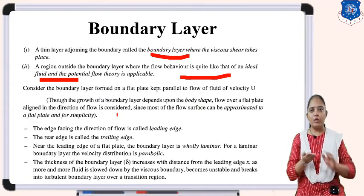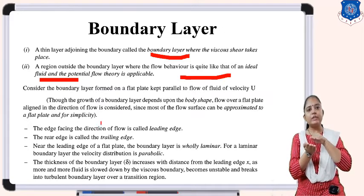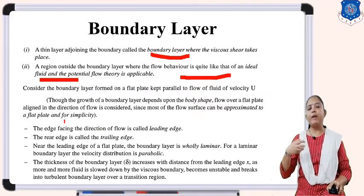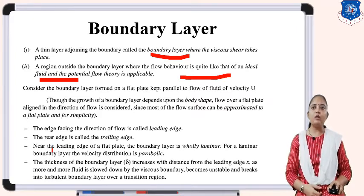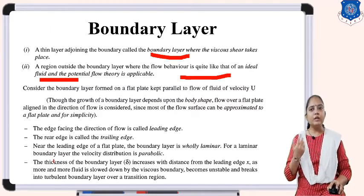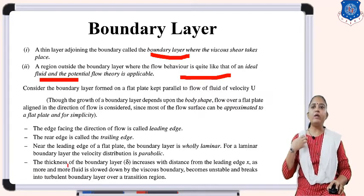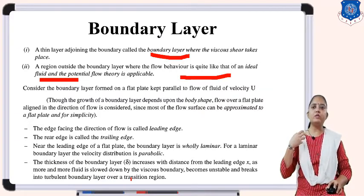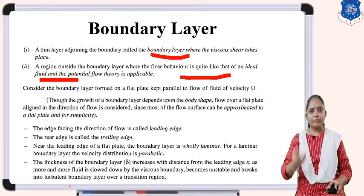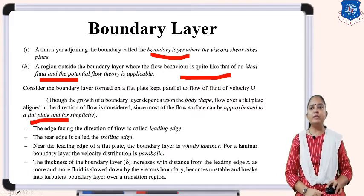Consider the boundary layer from a flat plate in parallel flow where velocity is capital U. The flow of a boundary layer depends upon the body shape; flow over a flat plate aligned in the direction of flow is considered since most flow surfaces can be approximated as a flat plate. Some assumptions: the edge facing the direction of flow is called the leading edge; the rear edge is called the trailing edge. Near the leading edge the boundary layer is only laminar, with a parabolic velocity distribution. The thickness delta increases with distance x, and as more fluid slows down due to viscosity, the flow becomes unstable and breaks into turbulent flow.